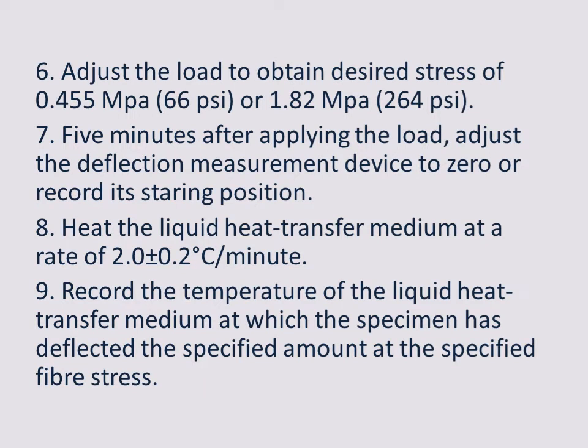Adjust the load to obtain the desired stress of 0.455 MPa (66 psi) or 1.82 MPa (264 psi). Five minutes after applying the load, adjust the deflection measurement device to zero or record its starting position. Heat the liquid heat transfer medium at a rate of 2.0 ± 0.2 degrees Celsius per minute. Record the temperature of the liquid at which the specimen has deflected the specified amount at the specified fiber stress.